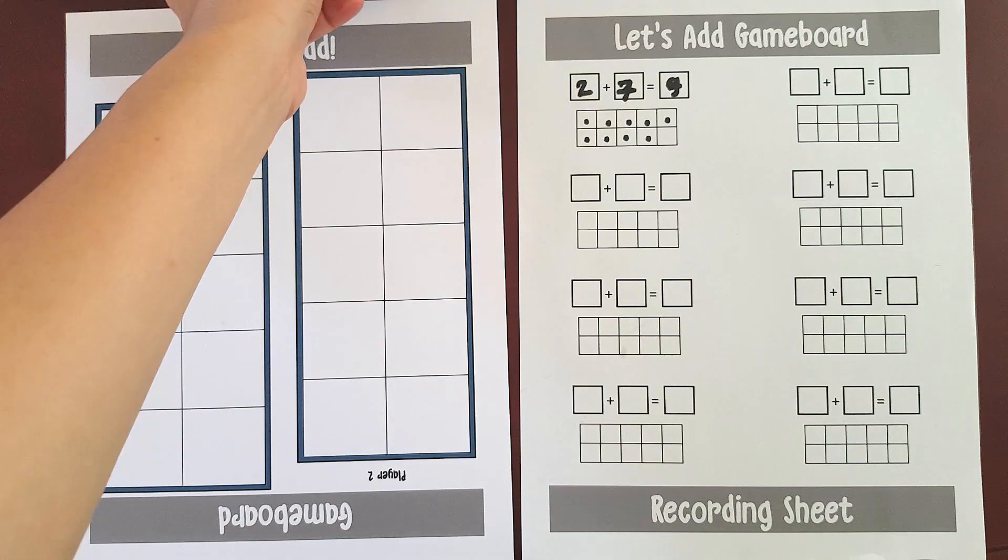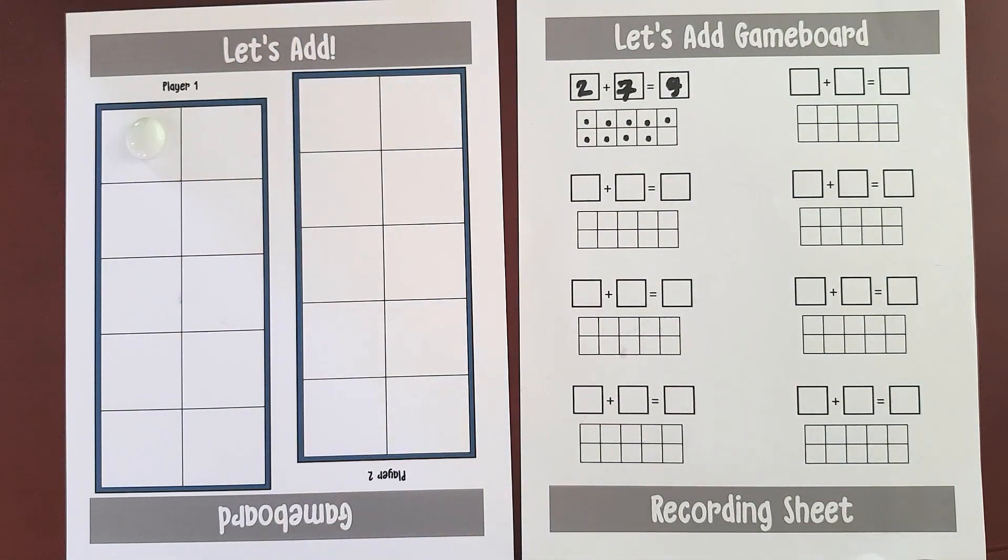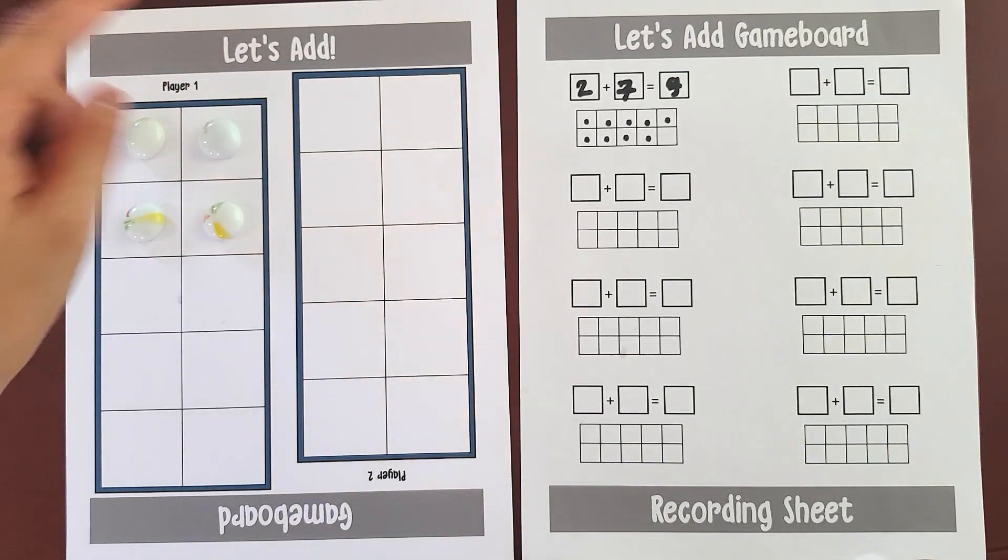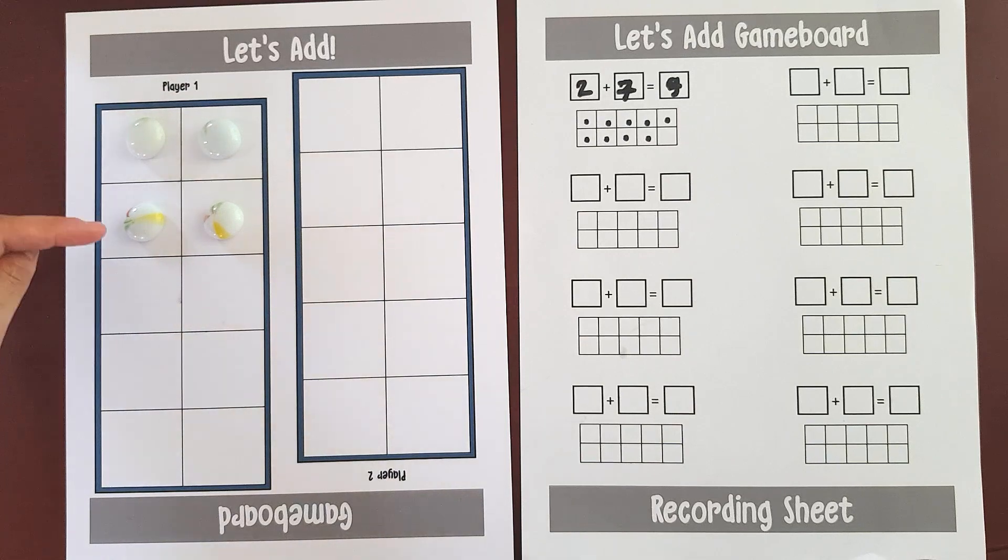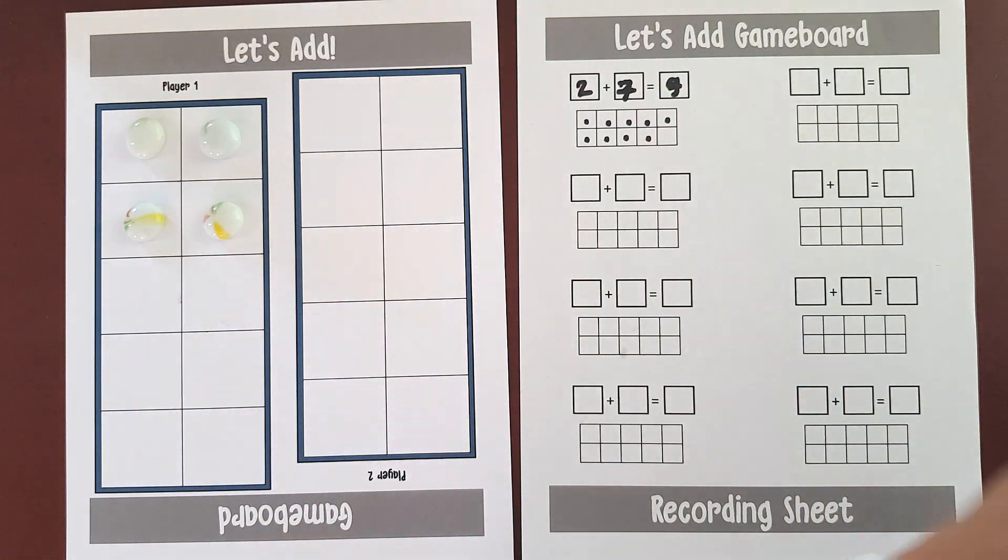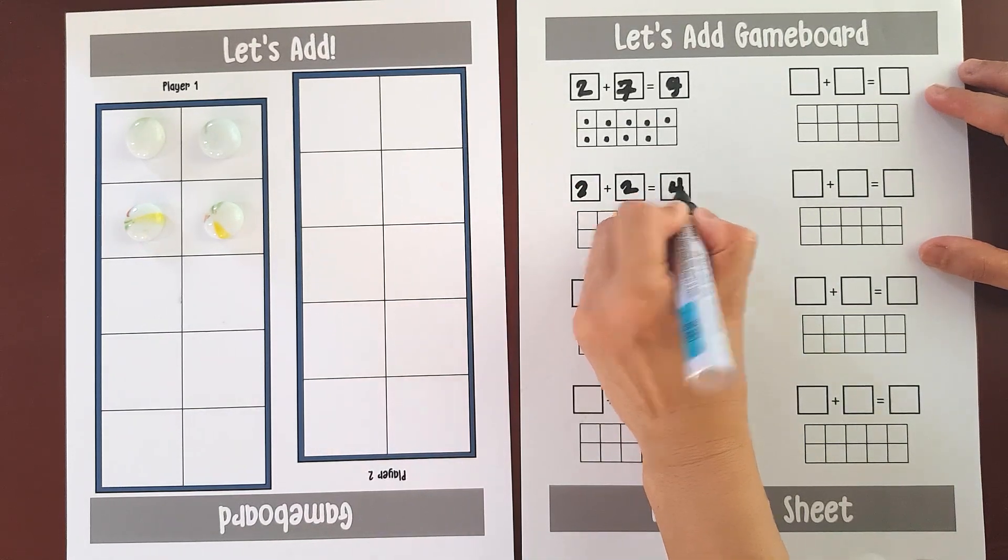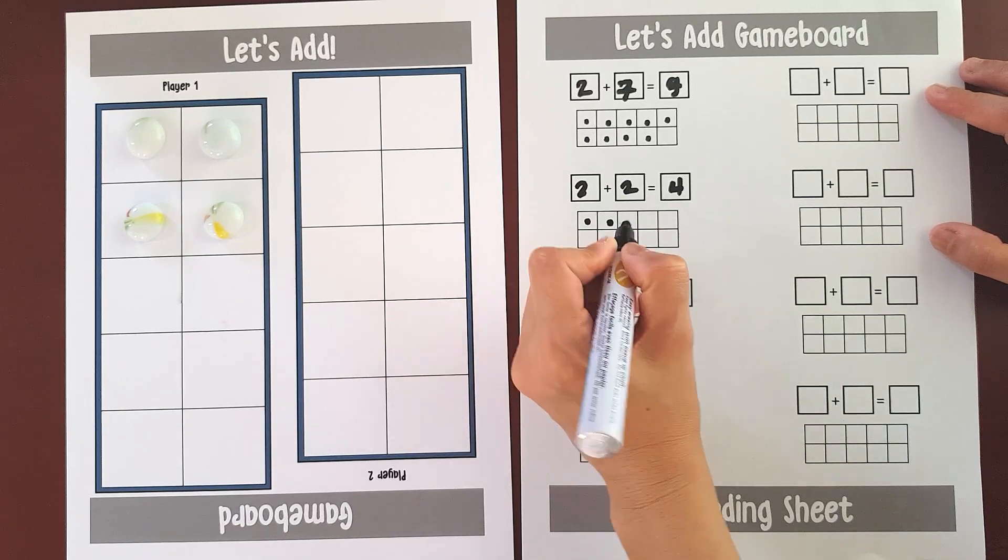Okay, so they need to put counters here. 1, 2, and then 2 on the other frame. So that means 2 and 2 makes 1, 2, 3, and then 4. And they have to record it here. So 2 plus 2 equals 4. And then they have to put dots.